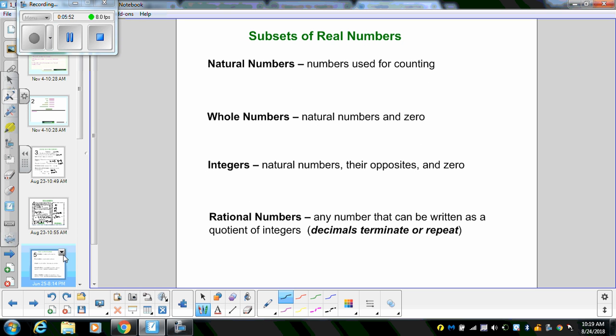So we have subsets of real numbers. We have natural numbers, numbers that used for counting, such as 1, 2, 3, and 4. Whole numbers, or natural numbers, and 0, so that's 0, 1, 2, 3, 4. Again, these numbers keep going. When we show something that's going to steadily keep going in that pattern, we usually use three dots.